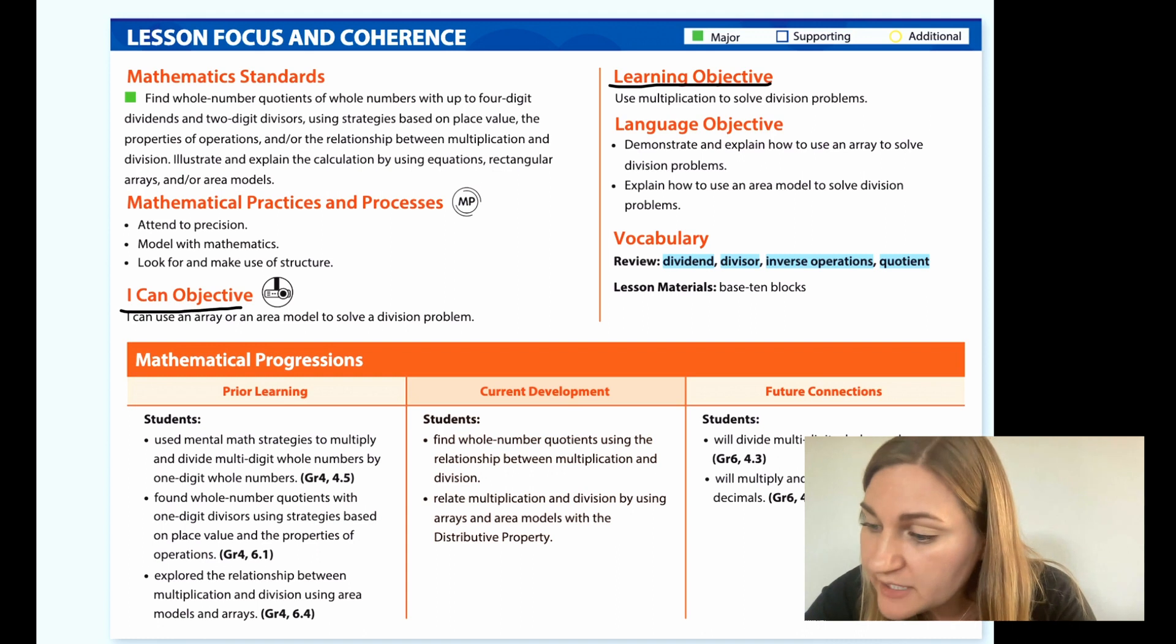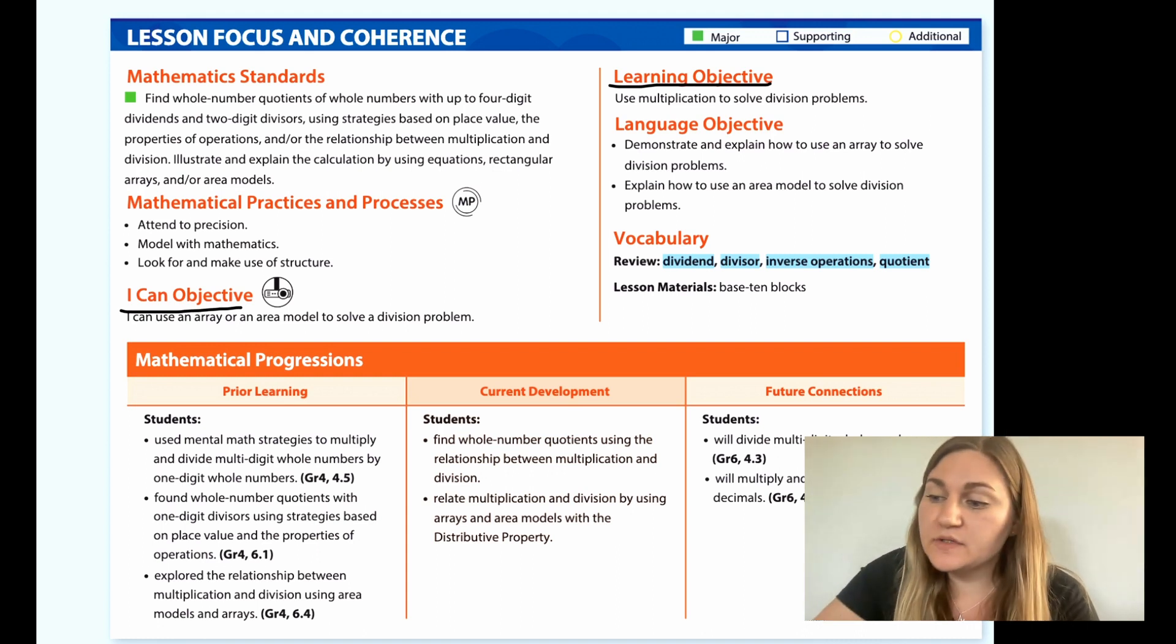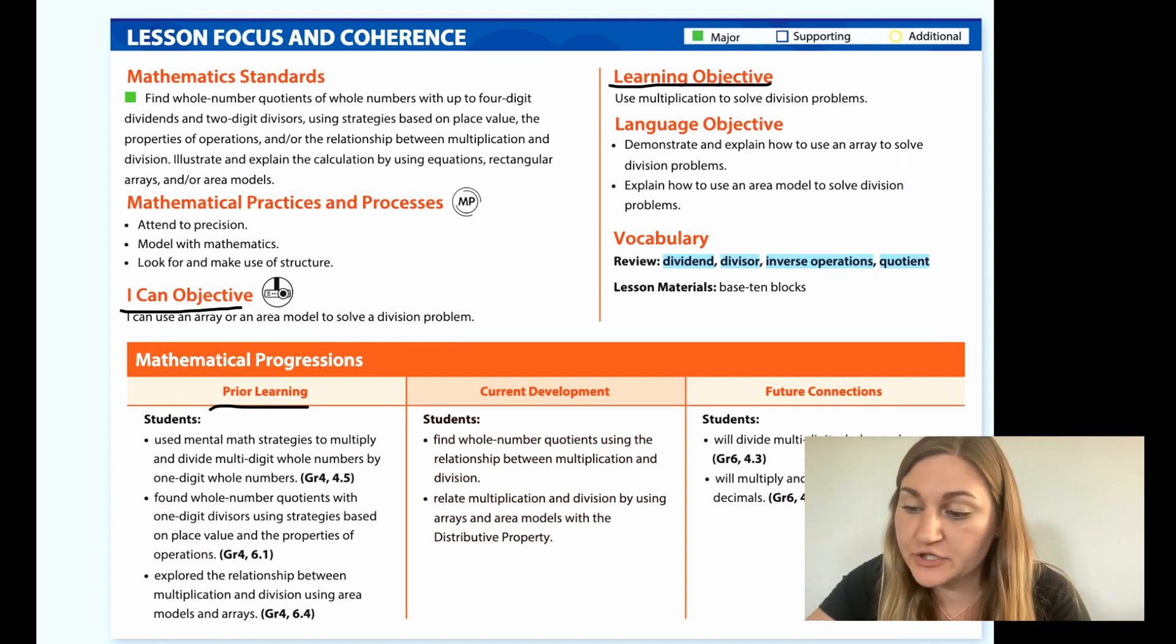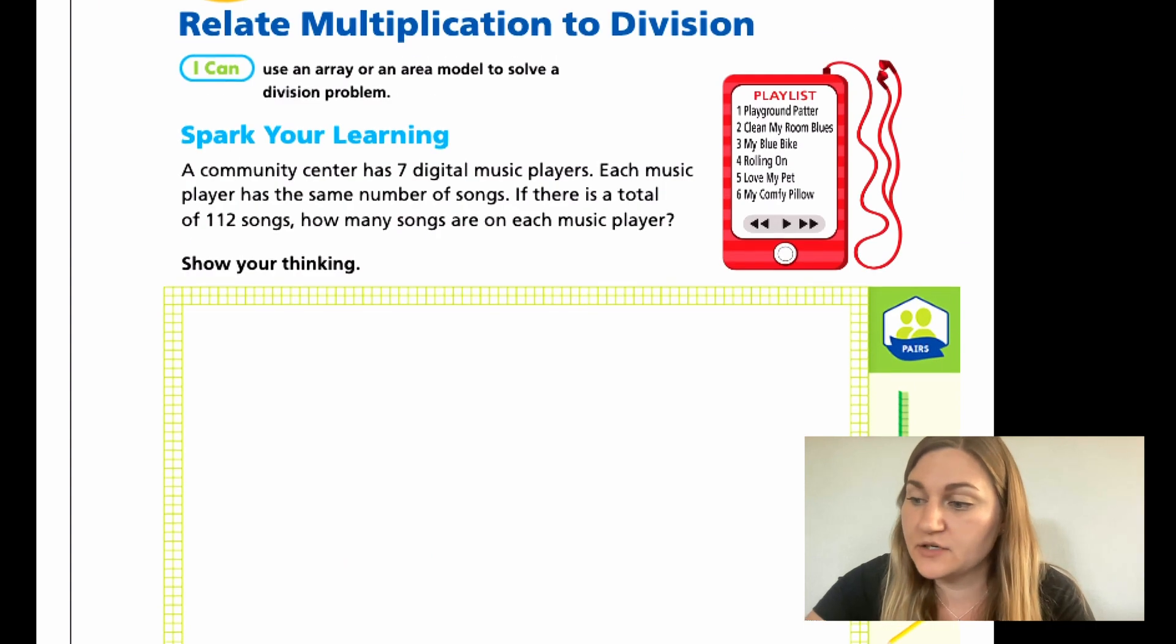All right, the learning objective is use multiplication to solve division problems. In their prior learning in 4th grade, students used mental math strategies to multiply and divide multi-digit whole numbers by one-digit whole numbers. Students found whole number quotients with one-digit divisors using strategies based on place value and the properties of operations. And lastly, students explore the relationship between the multiplication and division using area models and arrays.